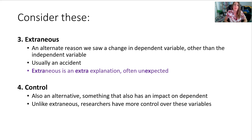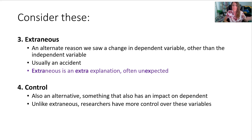Extraneous variables present an alternative reason for a change in the dependent variable other than the independent variable. They're often accidental or unforeseen — I remember this by thinking that the extraneous variable is an extra explanation, often unexpected. Control variables are very similar — they're also alternative factors that play into the results, but they are things the researcher tends to have more control over and foresees ahead of time.